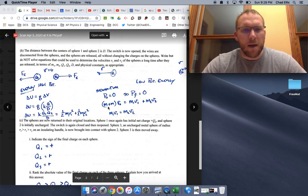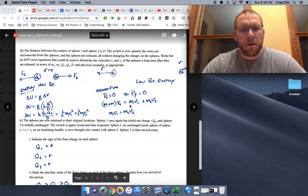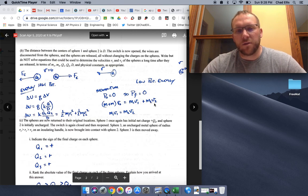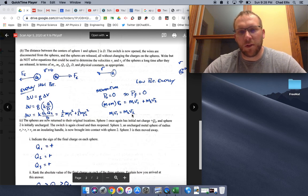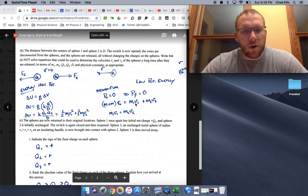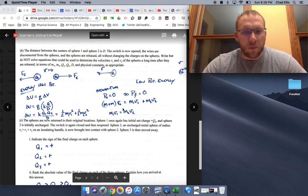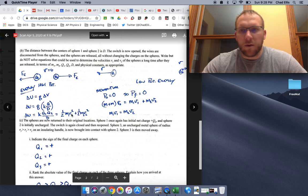So basically what we can say is mass plus mass times velocity initial, which again, this whole side is zero, is going to equal mass one times velocity one plus mass two times velocity two, which tells me mass one times velocity one equals mass two times velocity two. Now I have two equations with two unknowns and I could substitute V one in here, and I could solve for what V two is, or vice versa.